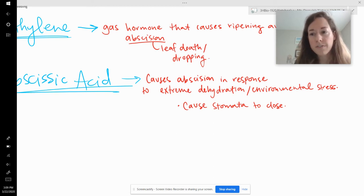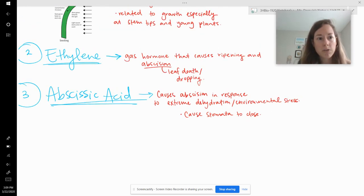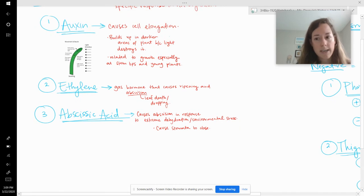So the difference between ethylene and abscisic acid is that ethylene is a gas and also that it will cause fruit ripening. And then abscisic acid is a stress response. So it'll be released in stress. Humans have stress hormones too. Ours is called cortisol. And it is what causes you to like feel stress. But we'll talk about that more when we get to humans. Okay. So those are three plant hormones: auxin, ethylene, and abscisic acid.